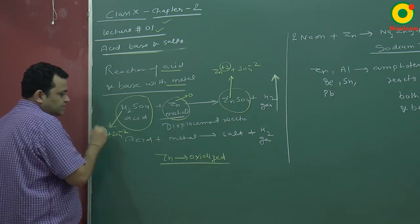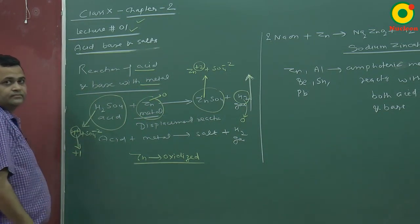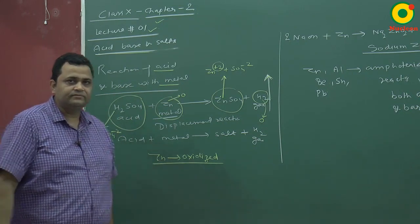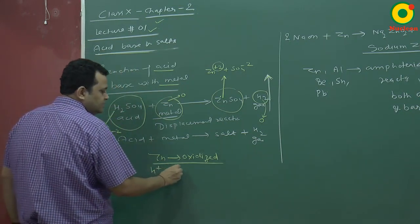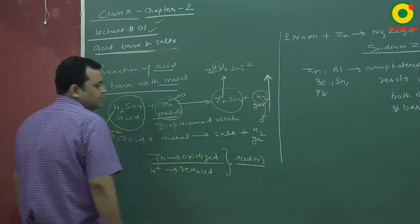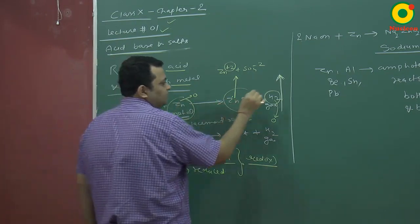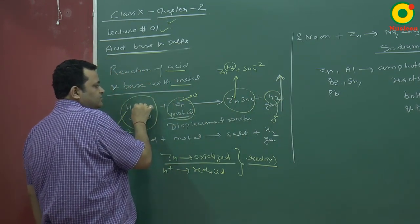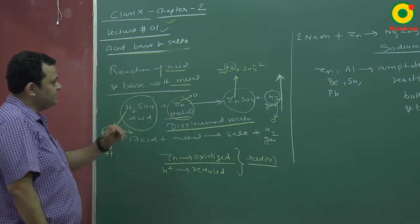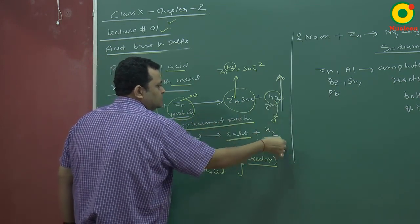H+ is converted into H2: hydrogen goes from the +1 state to the zero state, gaining electrons, so H+ is reduced. This reaction involves both reduction and oxidation, so it is called a redox reaction. Zinc replaces hydrogen from the solution, so it is also called a displacement reaction. In summary: acid reacts with metal to form a salt along with hydrogen gas.